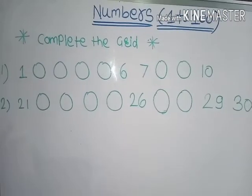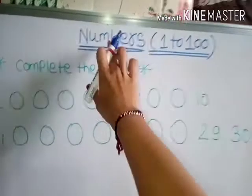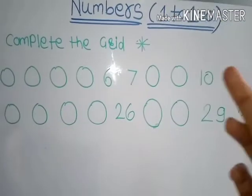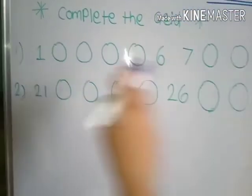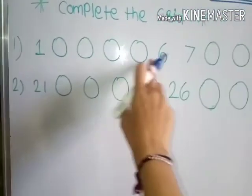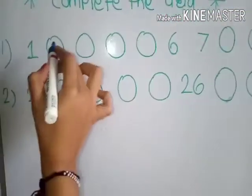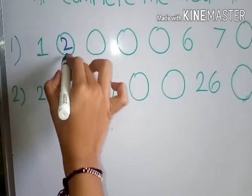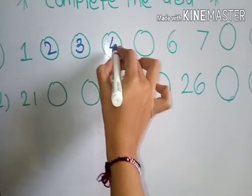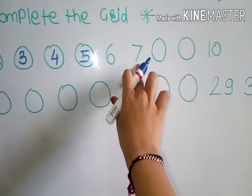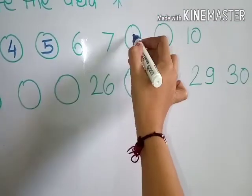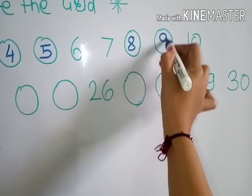Hello students, in this session we have to learn about the numbers from 1 to 100. Here you have been given 'complete the grid'. 1 after 2, 2 after 3, 3 after 4, 4 after 5.